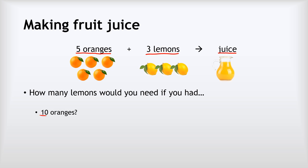Most of you have probably easily said to yourself: I need six lemons — and you'd be right. What about if you had 25 oranges? Probably most of you are okay with the idea that that would be 15 lemons. And what about two and a half oranges? Most of you are probably okay with the idea that that would be 1.5 lemons. But how do you actually do that mathematically? You've done some ratio maths, and the way ratio maths works is like this.